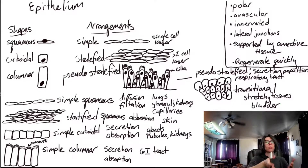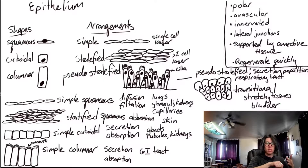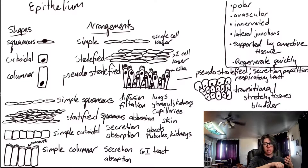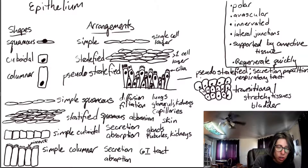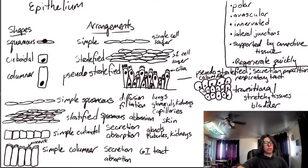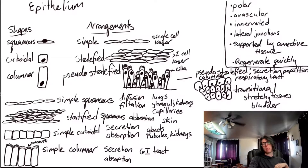These are the most important epithelial tissue types: simple squamous, stratified squamous, simple cuboidal, simple columnar, pseudo-stratified columnar, and transitional — six different epithelial tissue types commonly found in the body.